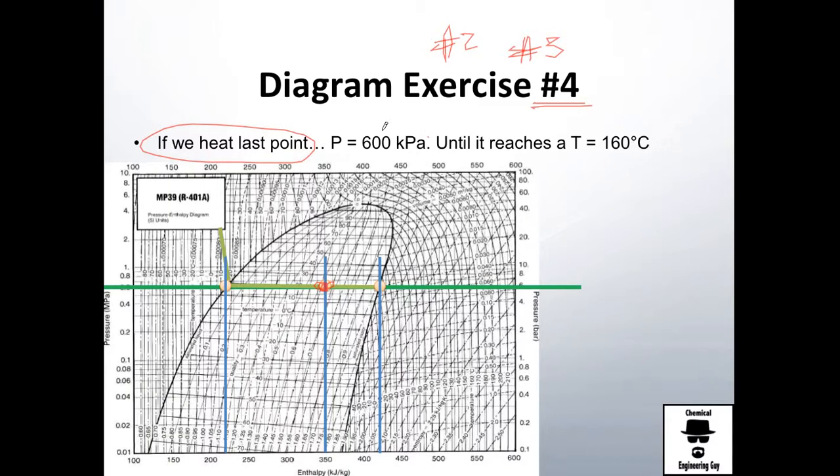You have the same pressure but you're going to change that temperature until it reaches 160 Celsius. Please tell me what it is, are we going to have a superheated vapor, what enthalpy is it going to have, and so on. I want to know the point on the diagram.